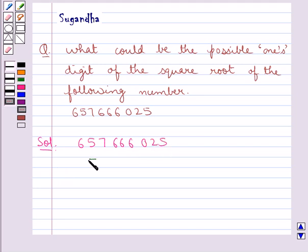Now 5 square is equal to 25. Therefore, square root of 25 is 5.